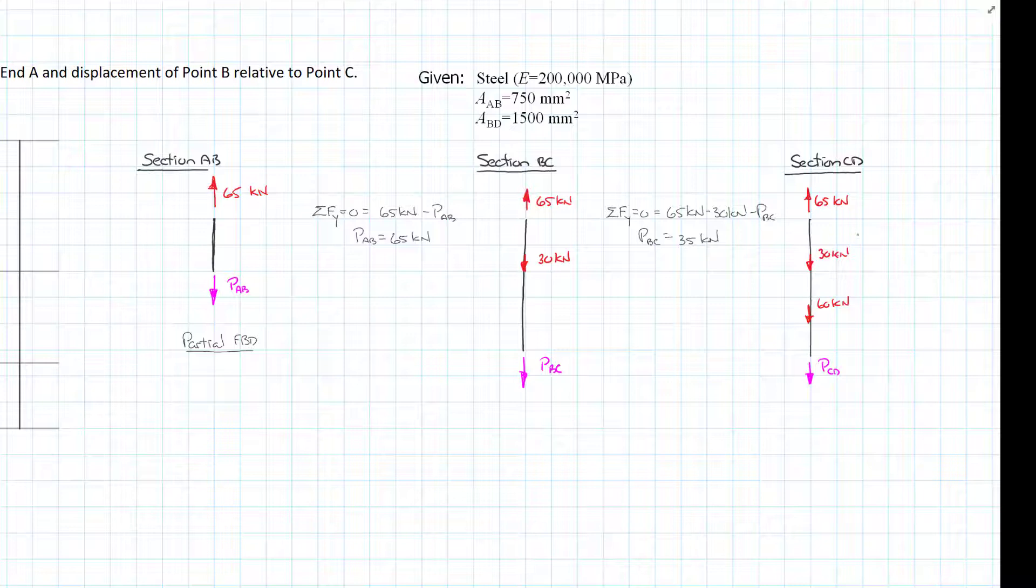Again we're going to apply our equation of static equilibrium. Sum of the forces in the y direction equals zero, equals 65 kilonewtons minus 30 kilonewtons minus 60 kilonewtons minus P_CD. That tells us that P_CD equals negative 25 kilonewtons, which means that rather than being in tension it's going to be in compression.